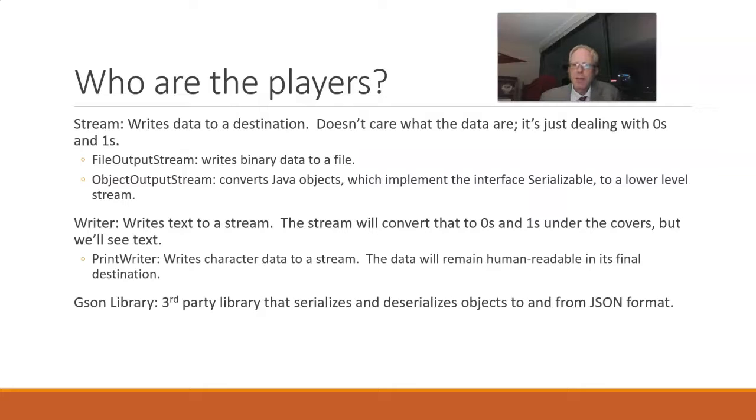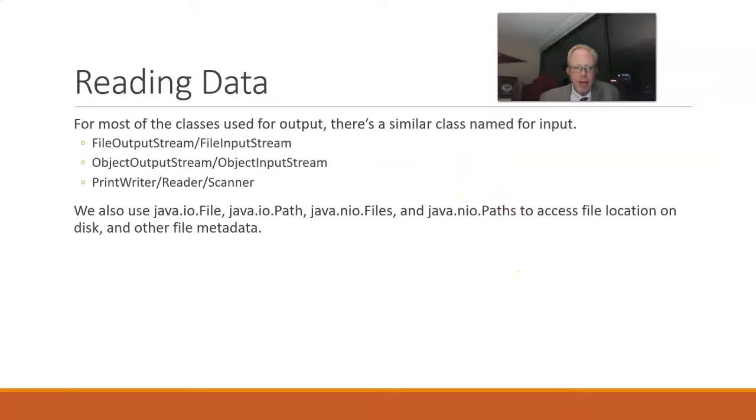Then a writer is writing text or character data to a stream, and the stream converts those to zeros and ones, but we still see the text. And in our case, we saw that was the print writer. And then we also know that JSON is what we can use to serialize and deserialize objects into a JSON format.